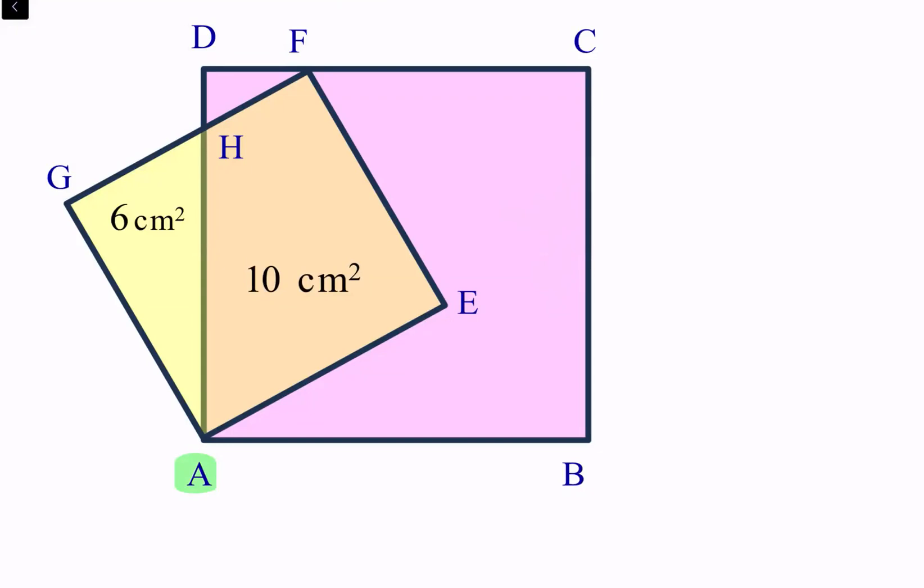So the smaller square has a total area of 16 centimeter square, so we can say that the length of each side is 4 centimeter. So AG is 4 centimeter.